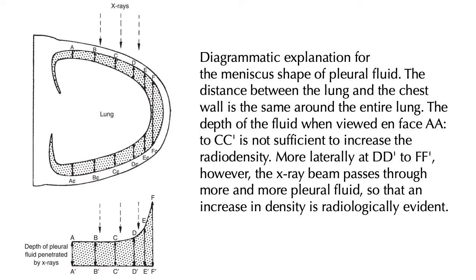The meniscus shape of pleural fluid seen on x-rays occurs because the distance between the lung and chest wall is the same around the entire lung. The depth of fluid viewed on the PA is not sufficient to increase density, but more laterally the x-ray beam passes through more pleural fluid, so an increase in density becomes radiologically evident. This is more important when comparing a lateral chest x-ray versus a PA.